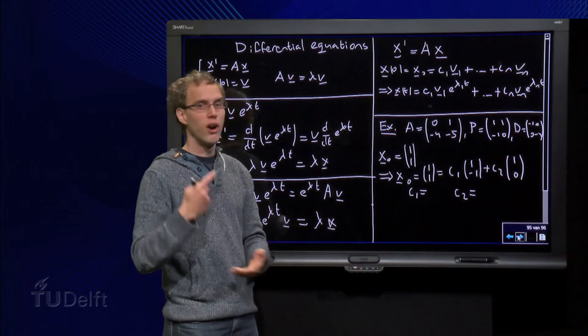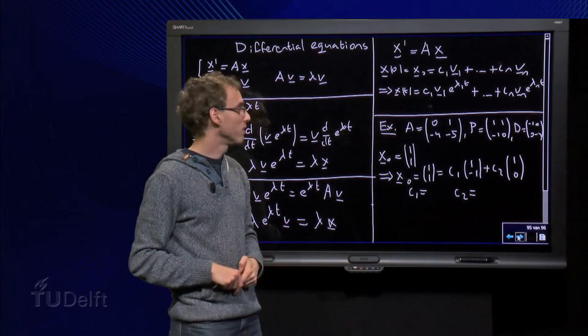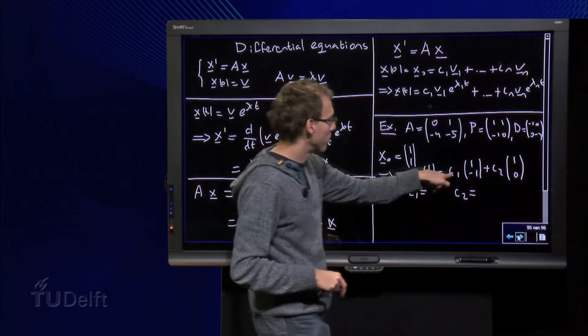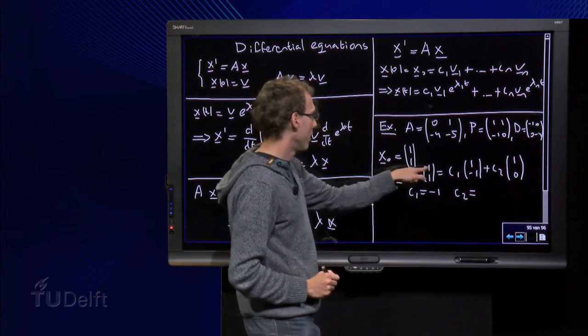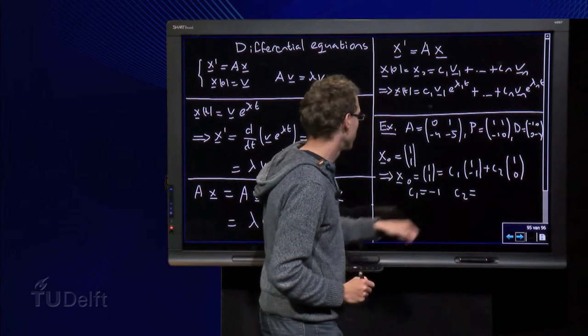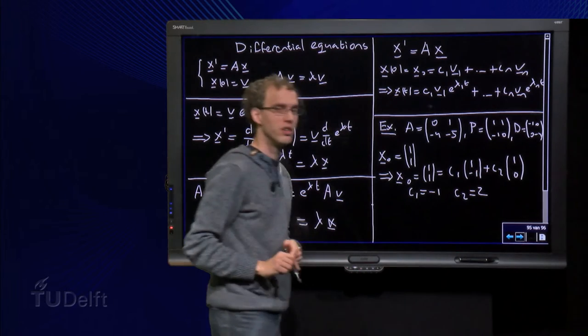Well, you can do a row reduction or you can use an inverse matrix, or you can just think about it first. Look at the second component, there is only a c1, so you know c1 equals minus 1. And then we have here a minus 1 plus c2 equals 1, so c2 equals 2. There you have the solution straight away.